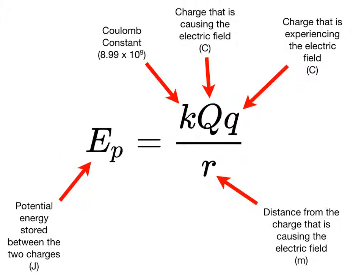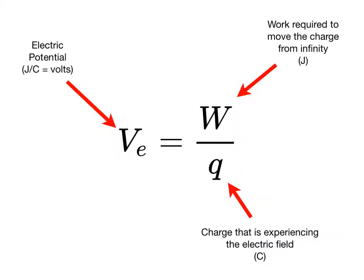This equation allows us to calculate the amount of electrical potential energy stored in the field between two charges, big Q and small Q, when the charges are a distance R apart from one another.